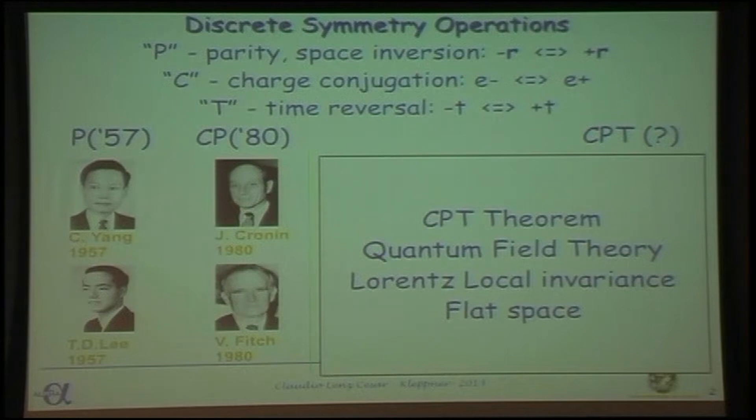There are some discrete symmetries in physics which are very important. One of them is parity. If you invert the space, physics was believed to be invariant under parity. And Li and Yang proposed a mechanism in the weak interactions by which parity would be violated. It was seen, and they got the Nobel Prize in 1957 for that. Essentially, we have left-handed particles and right-handed antiparticles. There is something missing. The universe is missing the symmetry.